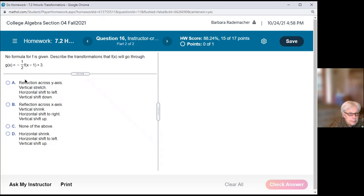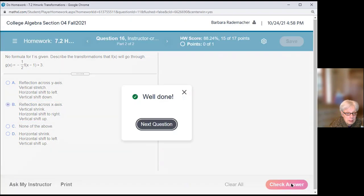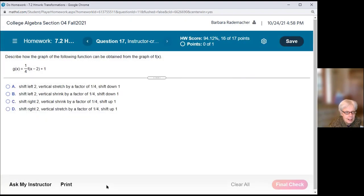Okay. I think this is the same problem, don't you? But let's see. We have a horizontal shift 1 to the right. We have a vertical shift up 3. We have a vertical shrink of a factor of one half. And then we have a reflection across the x axis. Now let's check this out. Reflection across x axis. Vertical shrink. Horizontal shift to the right. Vertical shift up. Woo!